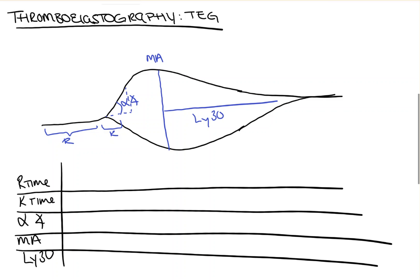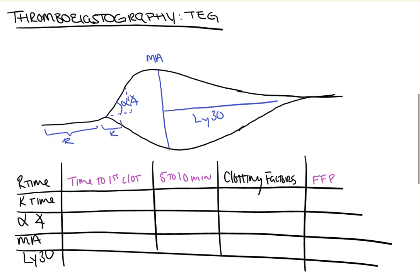What the R time represents is the time to first clot. And the normal for the time to first clot should be anywhere from 5 to 10 minutes. And remember, this is the first clot that's formed that can be detected by the machine. And, as you would imagine, it's a function of our clotting factors. And, therefore, the treatment is going to be FFP. Because FFP has all of our clotting factors, and we're trying to replace them in our patient. So, a prolonged R time means it's taking too long to start our first clot, and these patients should receive FFP.